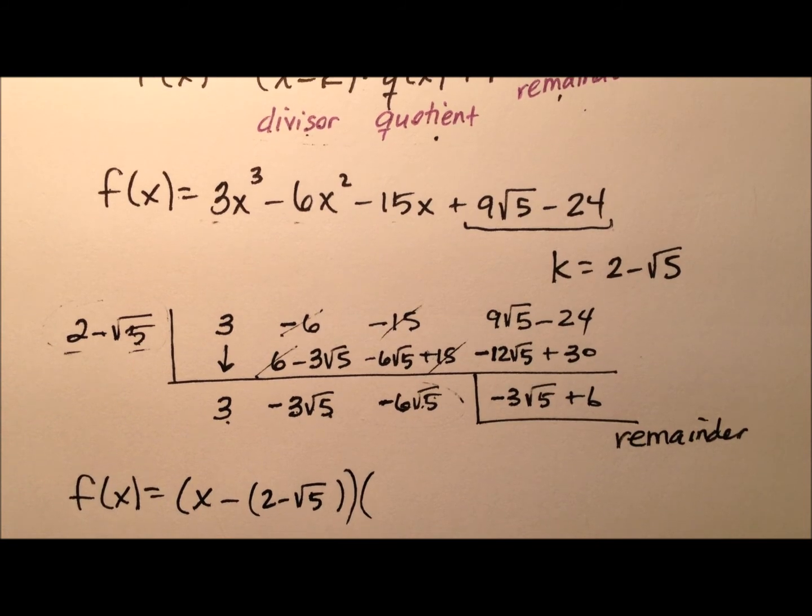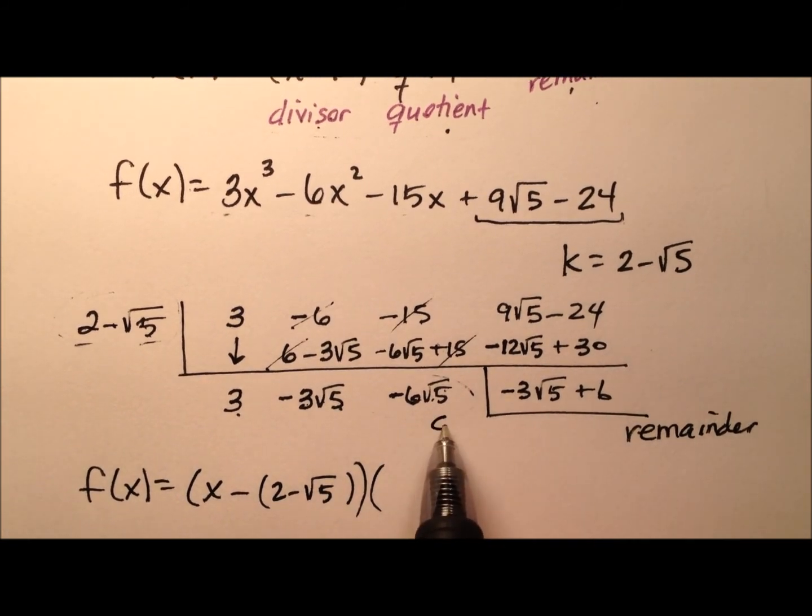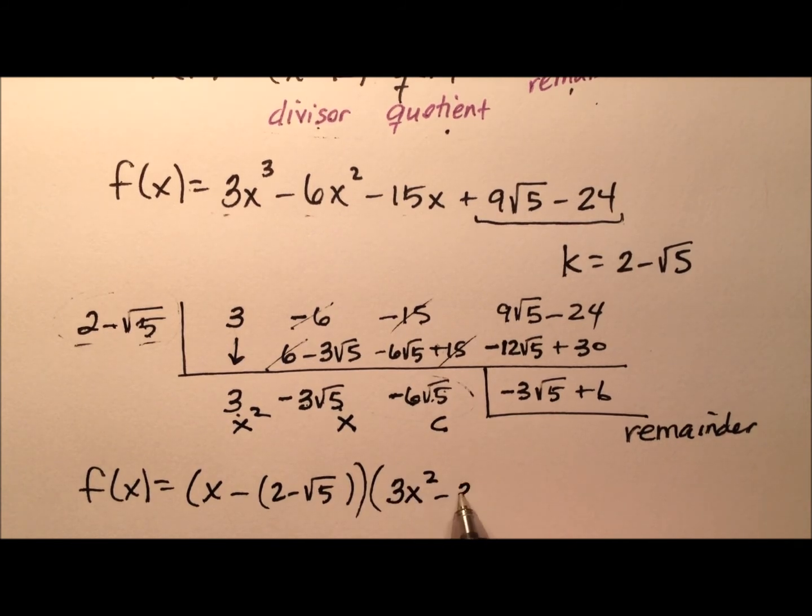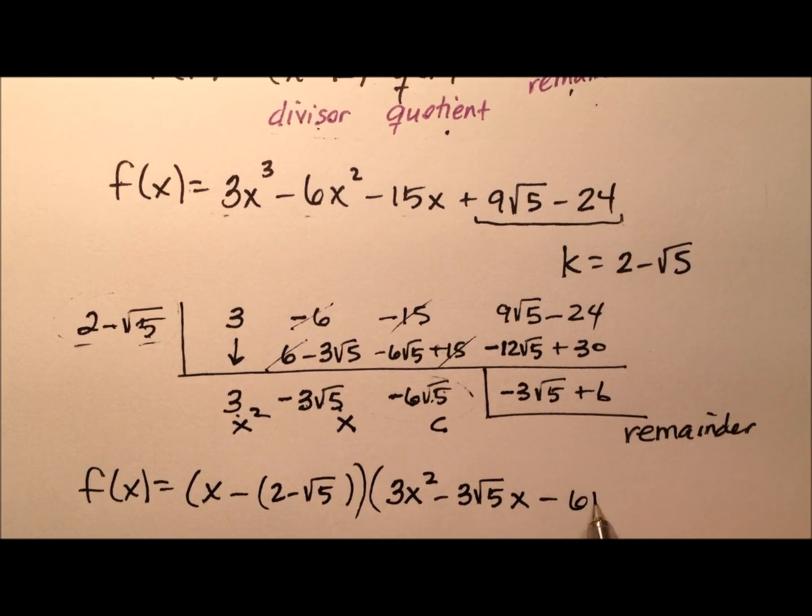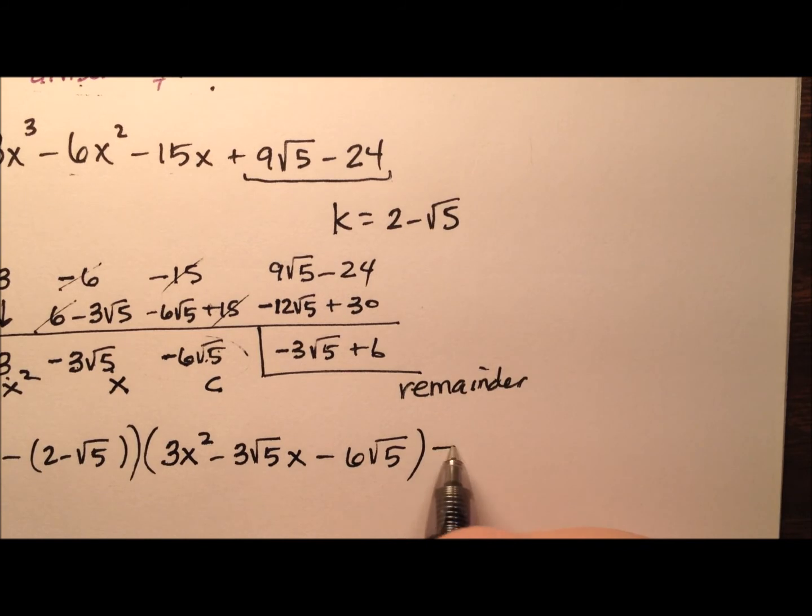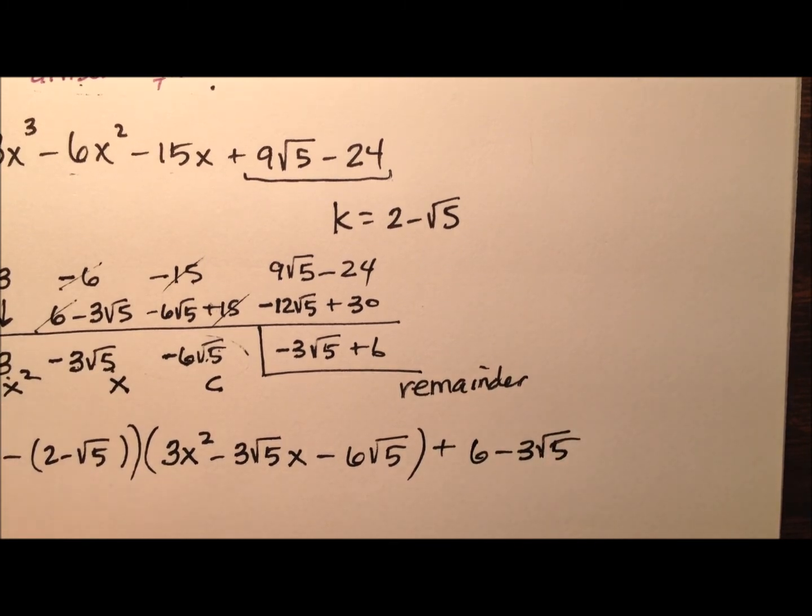And then we'll multiply by the quotient. So this was our constant, our linear term, and our quadratic term. So 3x squared minus 3 times the square root of 5 x, and then minus this constant, 6 times the square root of 5, and then to that we're going to add our remainder, which, let's go ahead and flip it around, so plus 6 minus 3 radical 5.